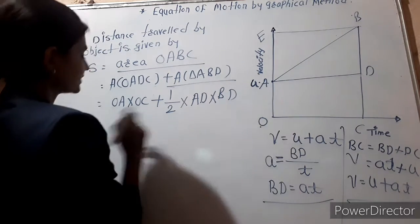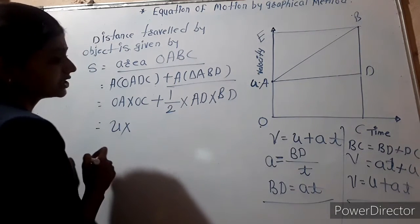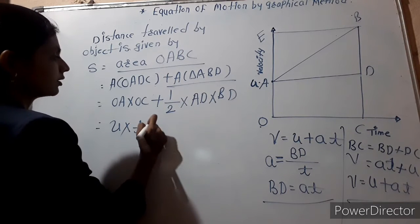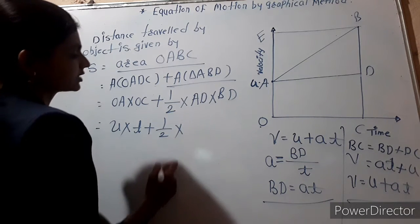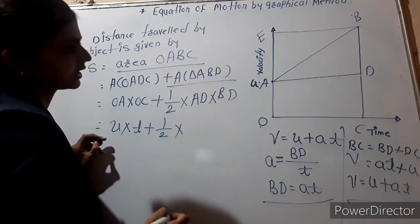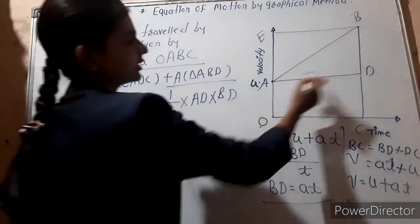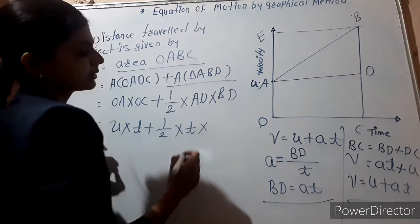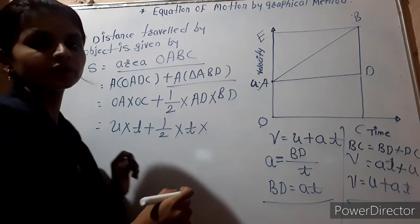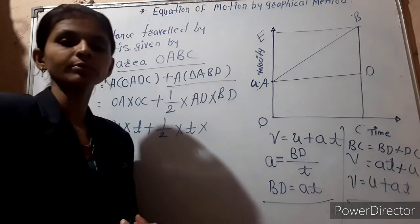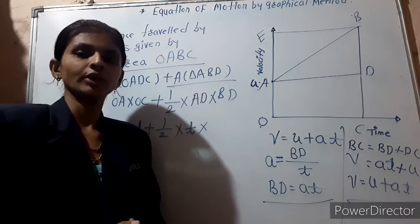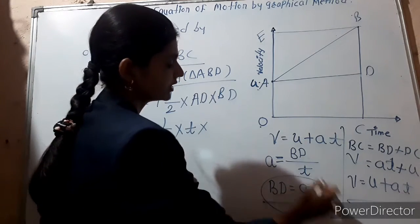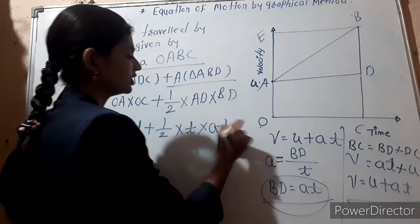oa is the initial velocity, so oa is u. oc is time t. Then one-half, keep as it is. ad represents the time, and bd represents the change in velocity — the rise in velocity. We already found the value of bd: bd is equal to at.